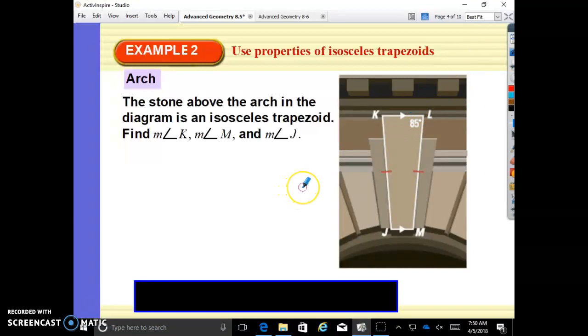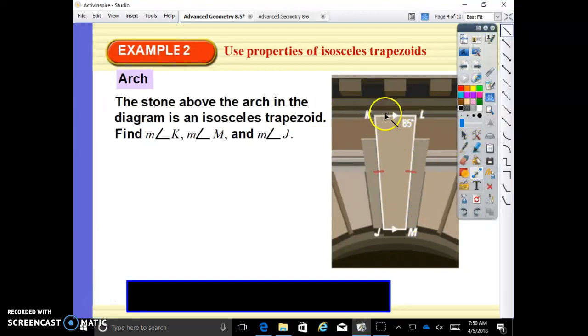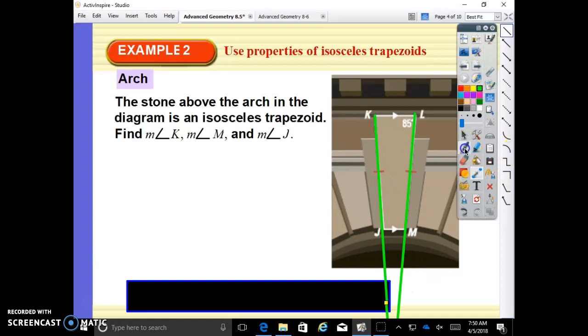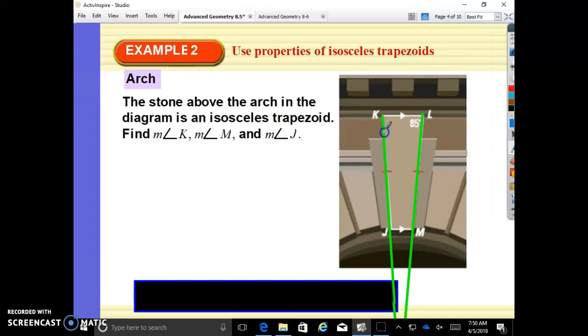The stone above the arch in the diagram is an isosceles trapezoid. Find the measure of angle K, angle M, and angle J. All right, so this is an isosceles trapezoid. What's cool is if I extended this out, it becomes an isosceles triangle. In an isosceles triangle, my base two angles are congruent. So if L is 85, then K is 85. These two are parallel lines, so same side insides are supplementary, consecutive interior angles. So this is 95, and this one is also 95. So angle M and J are 95, and angle K and L are 85.